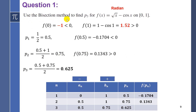Question 1: Use the bisection method to find P3 for f(x) = √x - cos(x) on the interval [0, 1]. First, if you have a trigonometric function, you need to use radians in your calculator — using degree mode will give errors. F(0) = -1, which is negative. F(1) is a positive value. P1 = (0 + 1)/2 = 0.5. F(0.5) is a negative value, so we replace the zero in the negative column with 0.5 and keep 1 in the positive column.